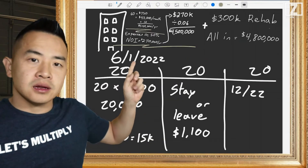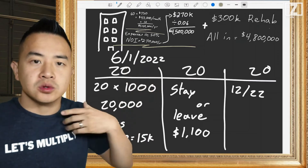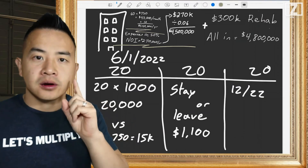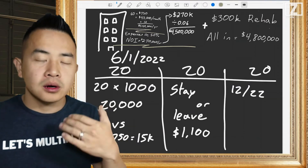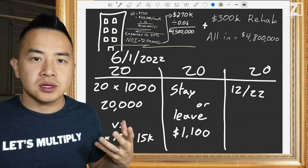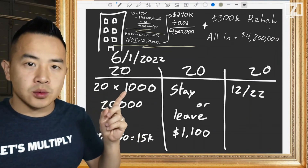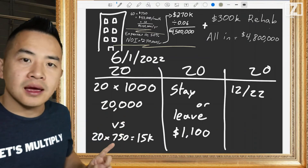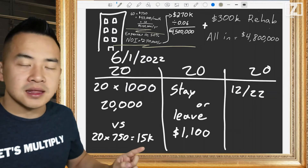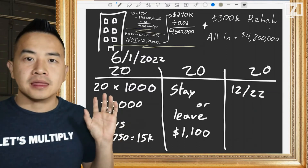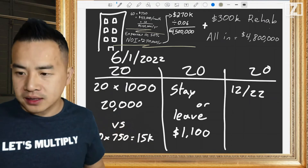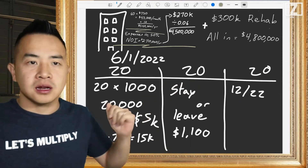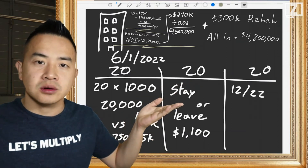Welcome to the future — it's June 1st, 2022, six months later. For the first 20 units, tenants either renewed at the higher rent or they left, we renovated the units, and raised the rent. Now we have 20 units at $1,000, bringing in $20,000 per month — compared to the previous $15,000 at $750 per unit. We've just increased the income by $5,000 just from the first 20 units.